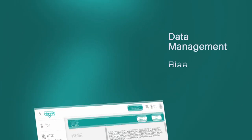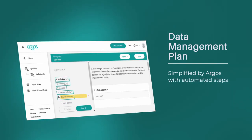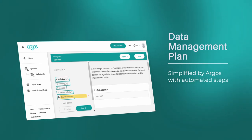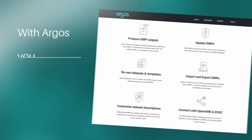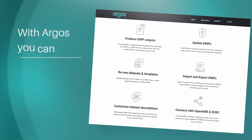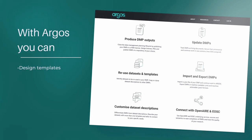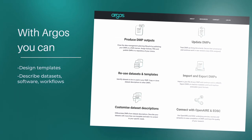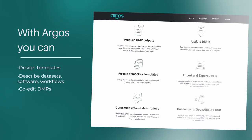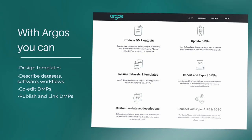Argos simplifies the writing of data management plans with automated steps. With Argos you can design templates using the Argos API collection, describe data sets, software, and workflows, co-edit DMPs, and publish and link DMPs with other research outputs and activities.